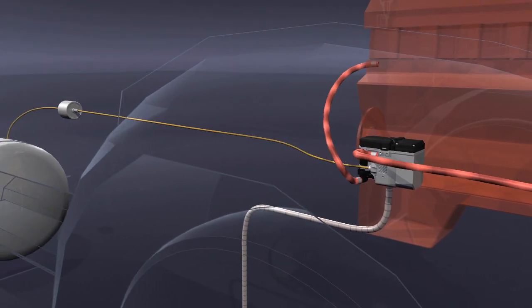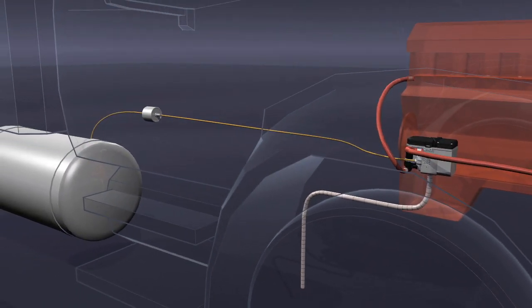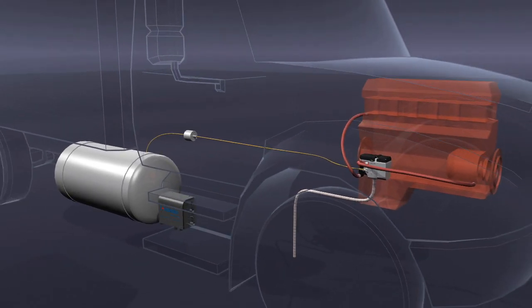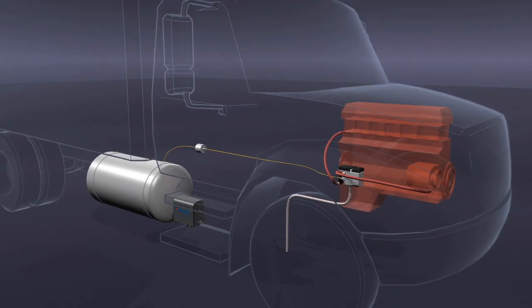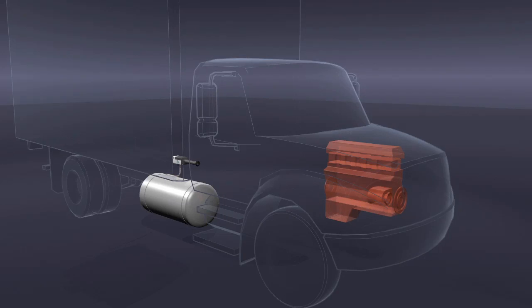A Webasto coolant heater can be mounted inside the engine compartment or on the truck's frame rail in a protective enclosure box. It can be used as a standalone solution or in conjunction with a Webasto air heater to create the ultimate heating system.